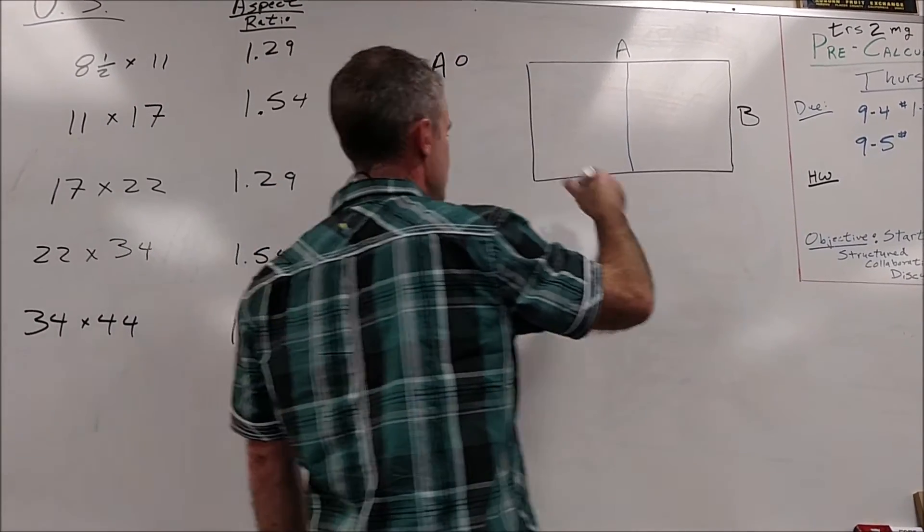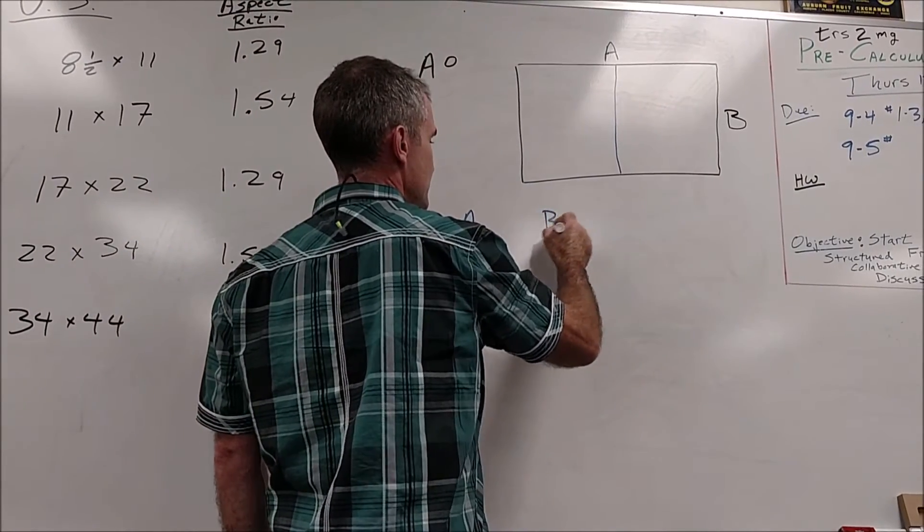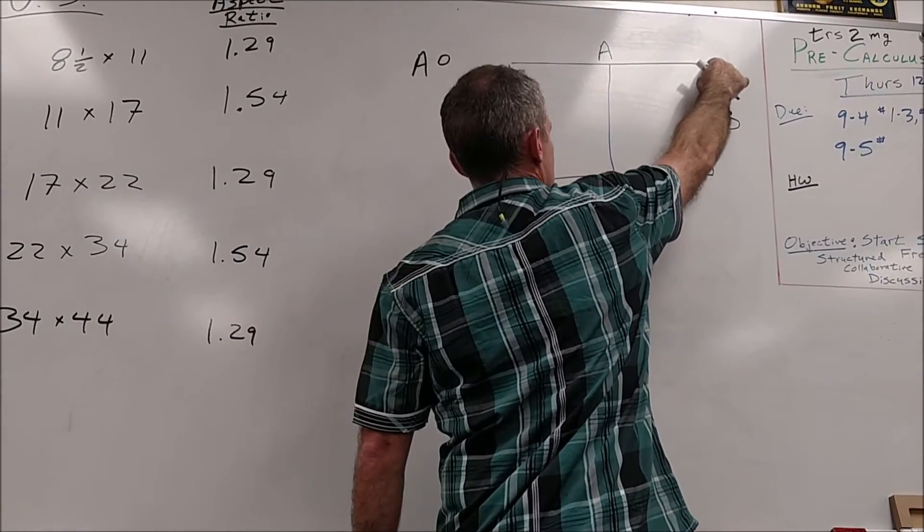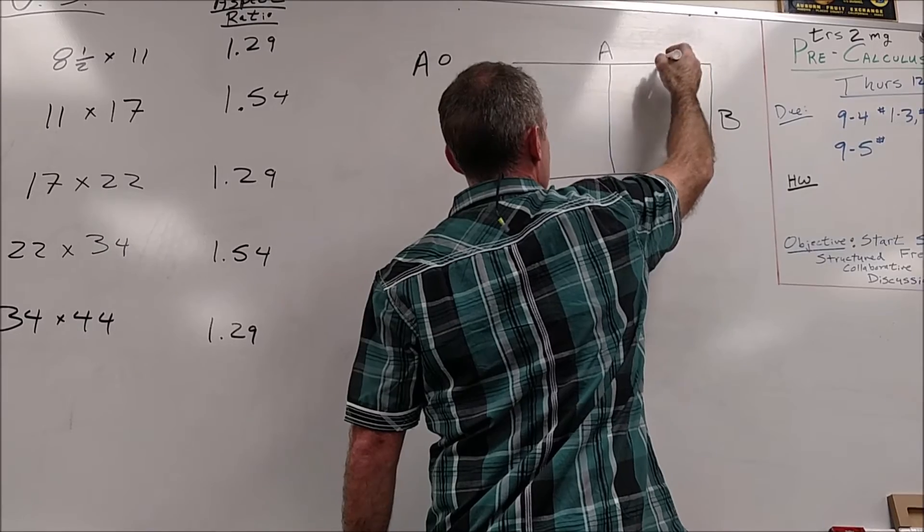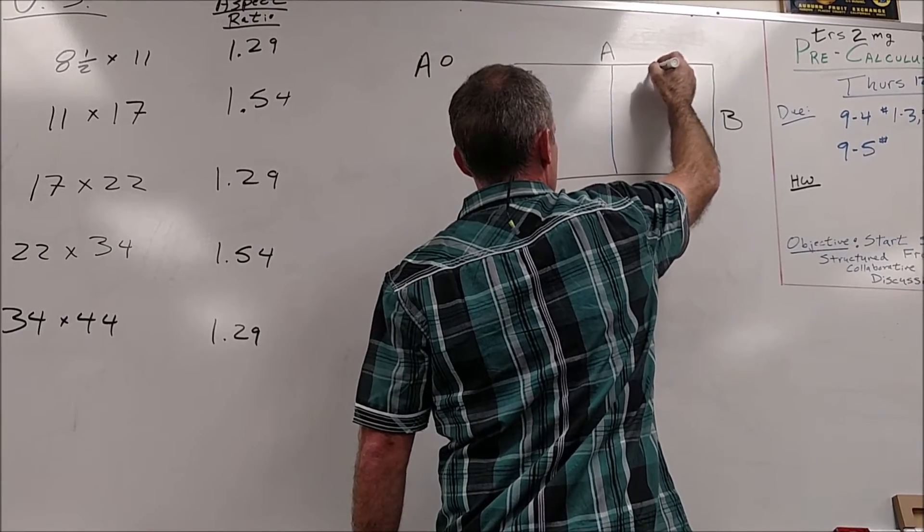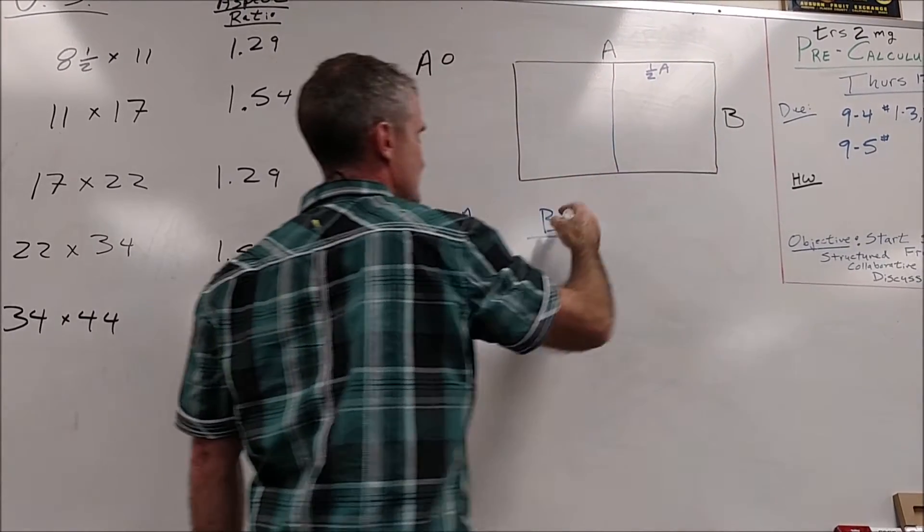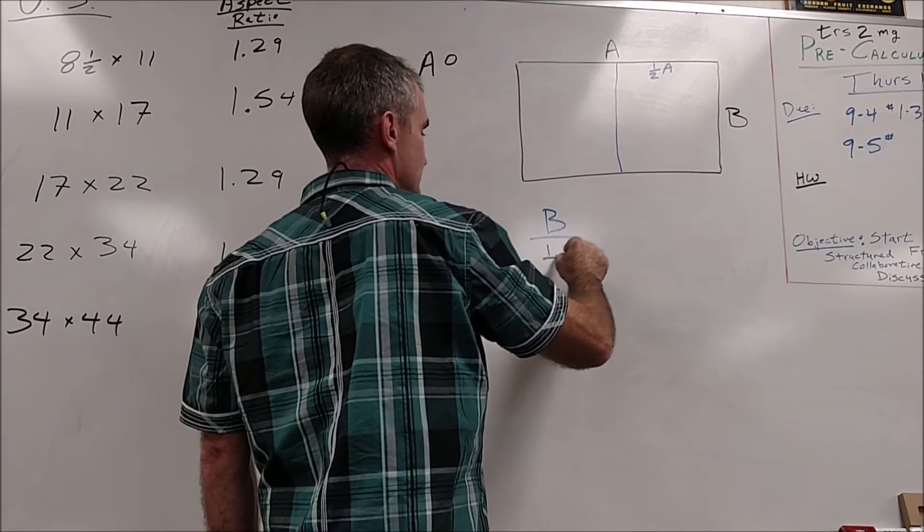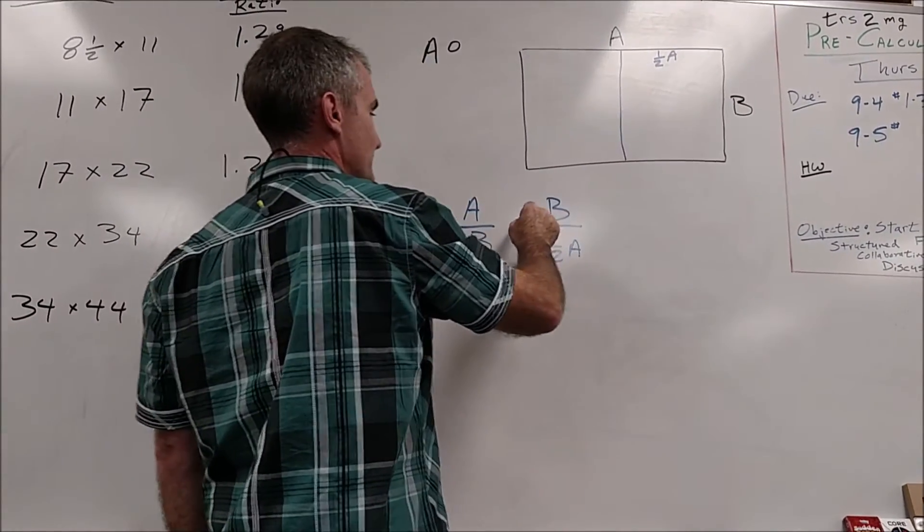And then the second one is now going to be B. B is my length now to my width, and this is half as long, so this is A, or this is one half A. So it's B to one half A, and those things have to be equal.